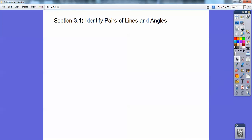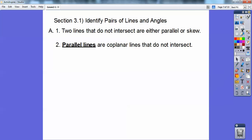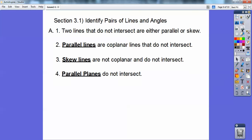So let's go ahead and identify pairs of lines and angles. Two lines that do not intersect are either parallel or skew. Parallel lines are coplanar and they don't intersect. Skew lines are not coplanar lines that don't intersect. I'll show you a picture of those in just a second.